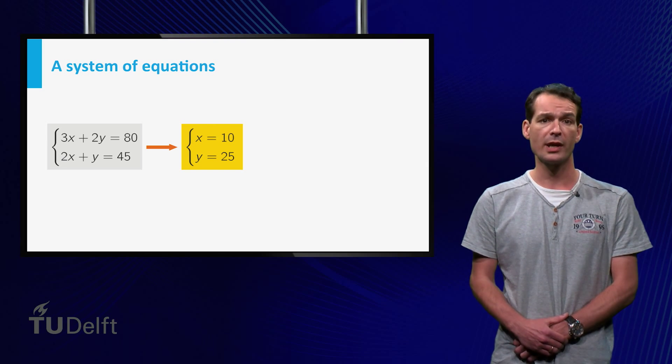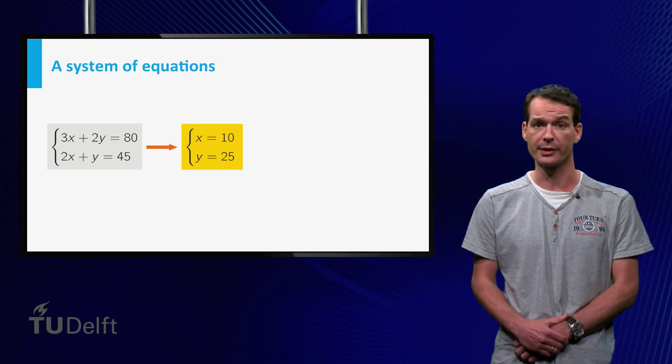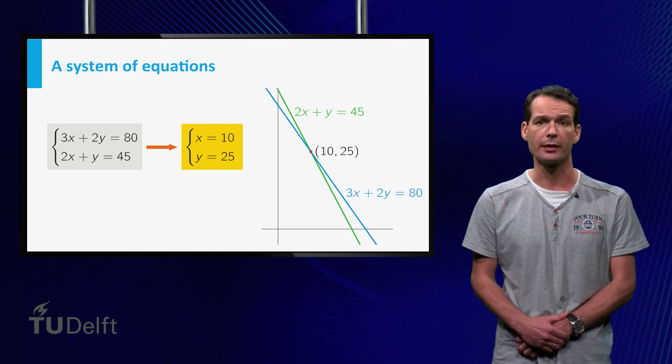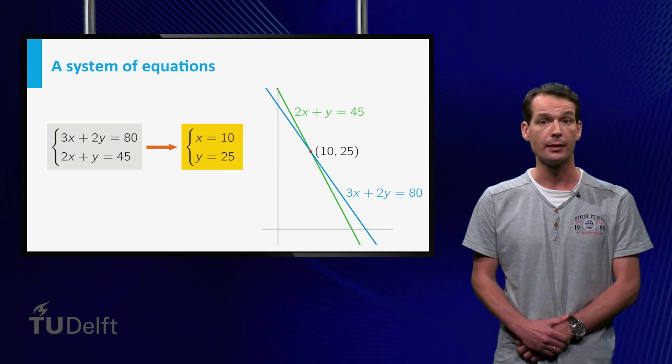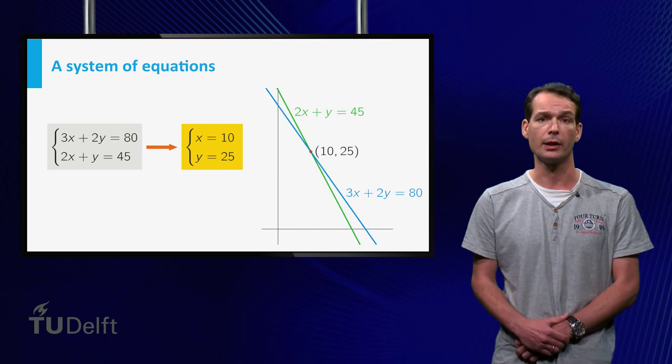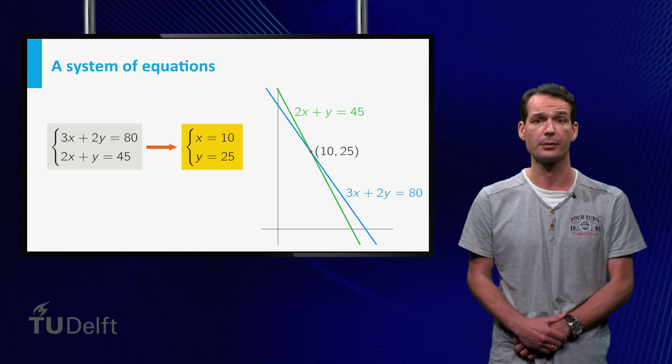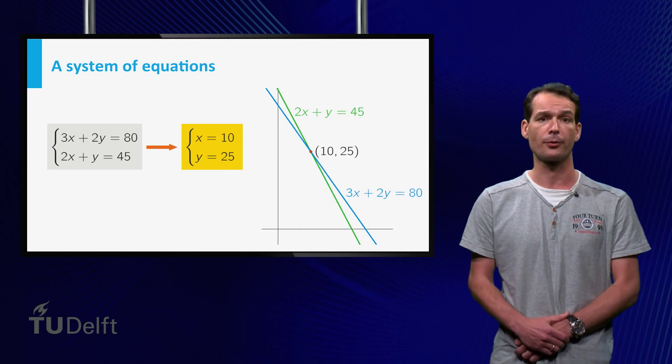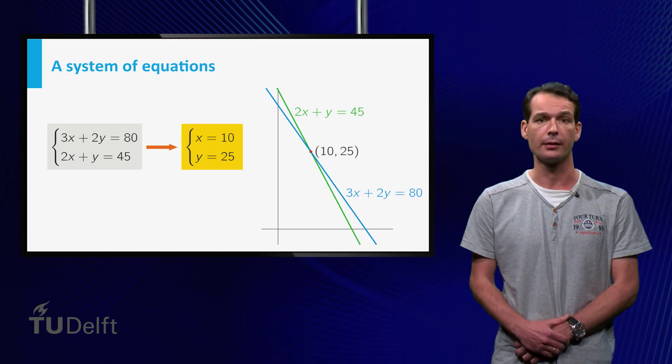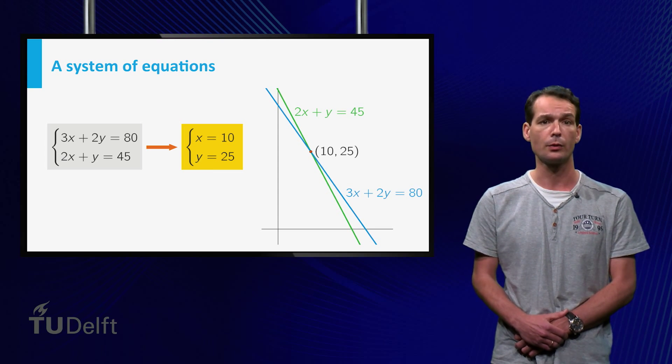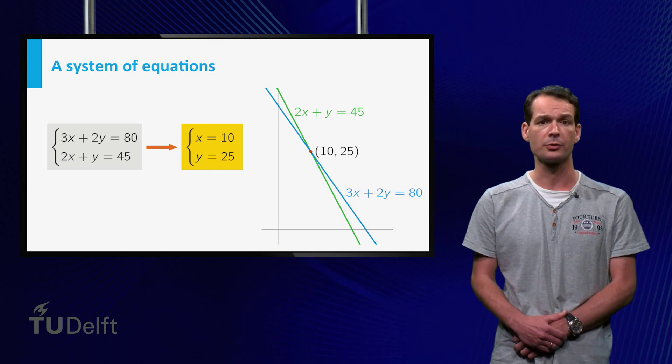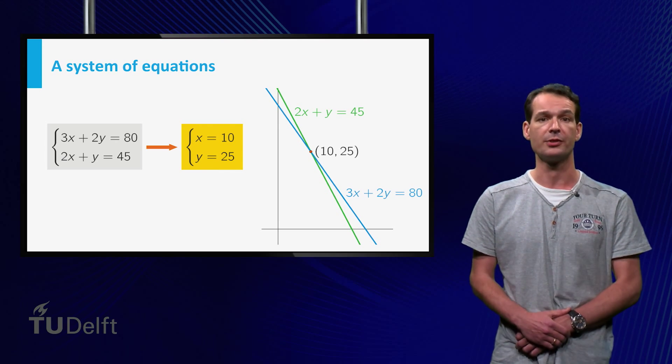The system of equations in this example also has a graphical interpretation. The equation 3x plus 2y equals 80 defines a line, namely the graph y equals 80 minus 3x divided by 2, the blue line here. The equation 2x plus y equals 45 defines the green line, which is the graph y equals 45 minus 2x. The solution that we found is the point of intersection of these two lines.